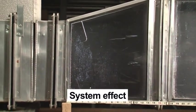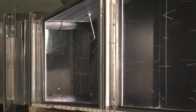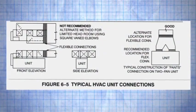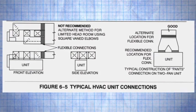System effect is an undesirable pressure loss that cannot be accurately calculated and is often caused by trying to make turns too quickly near the fan. Mechanical rooms that are too small are often the culprit.